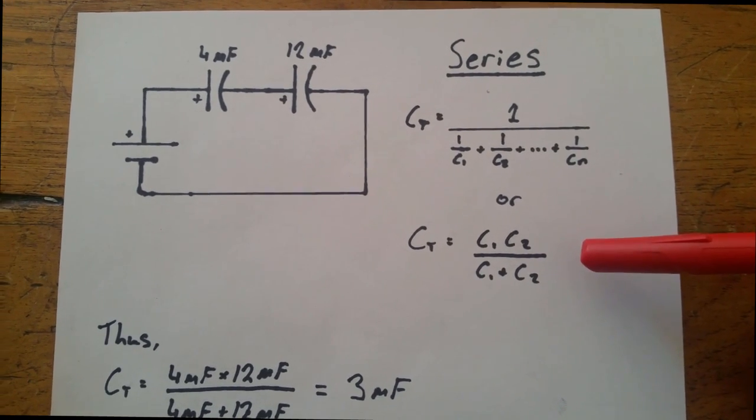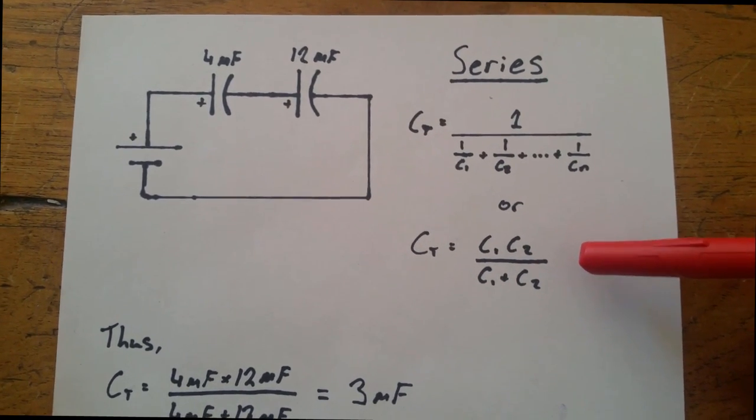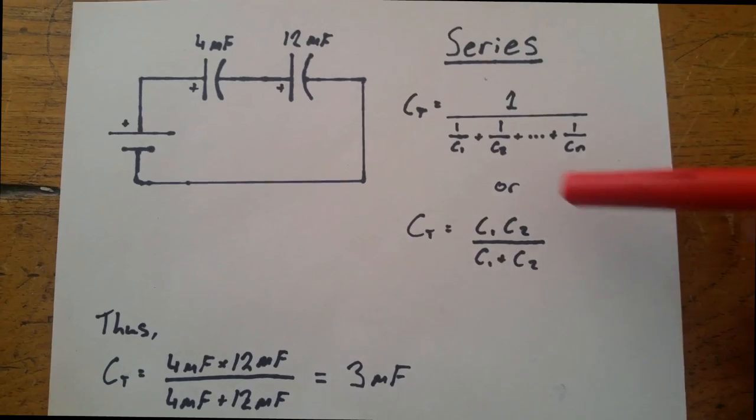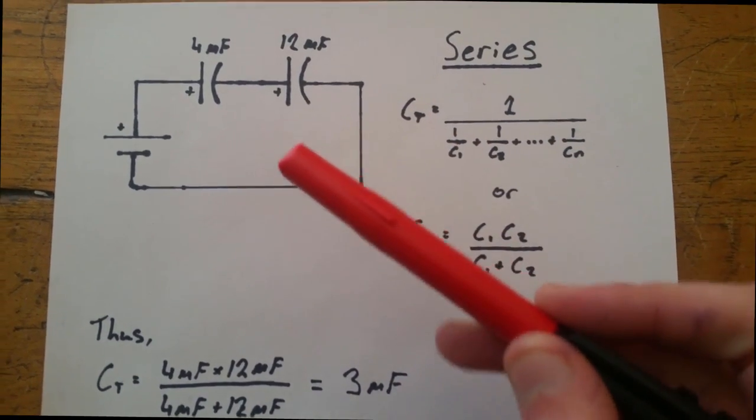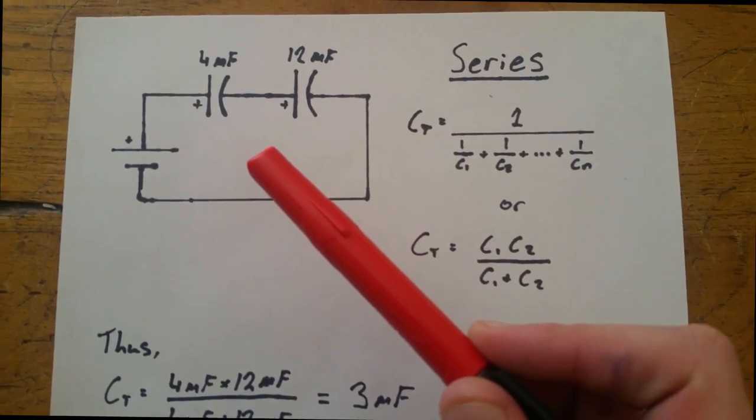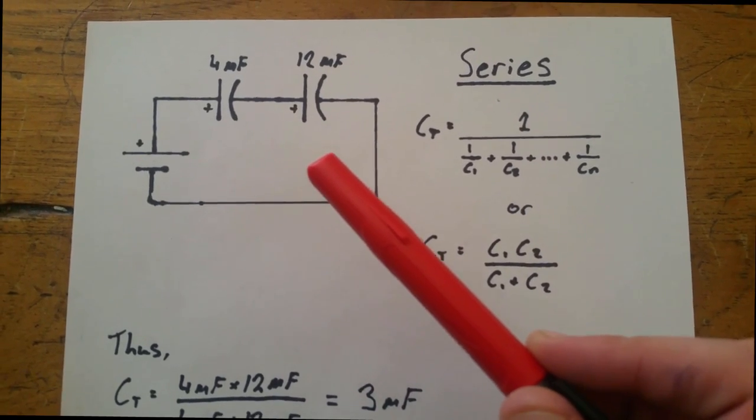This equation here is ample to use in many situations, such as this one. In this situation with the 4 microfarad and the 12 microfarad capacitors, we find the total capacitance to be 3 microfarads.